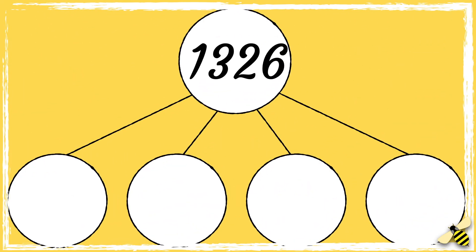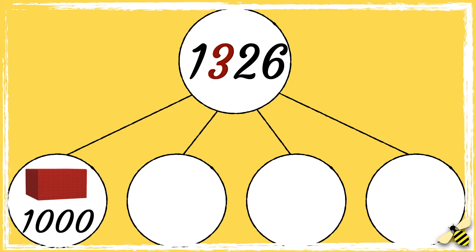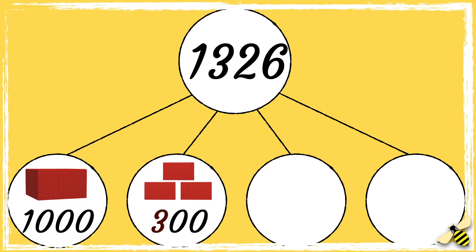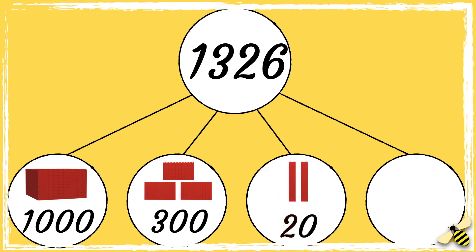Another way of showing the place value of each digit in a number is by using a part-whole model. One thousand three hundred and twenty-six has one thousand, three hundreds, two tens, and six ones.